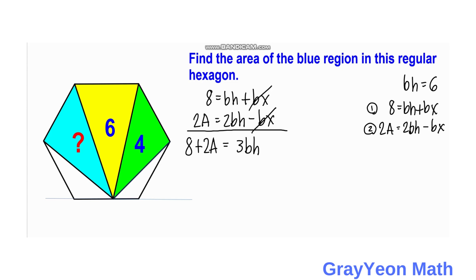Since we already know the value of BH, and that is 6, we have 3 times 6 is equal to 8 plus 2A. And therefore, this becomes 2A is equal to 3 times 6 is 18. Then put the positive 8 from the left hand side to the right hand side. Then we have negative 8.